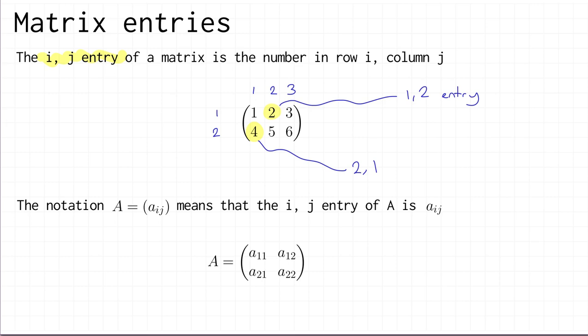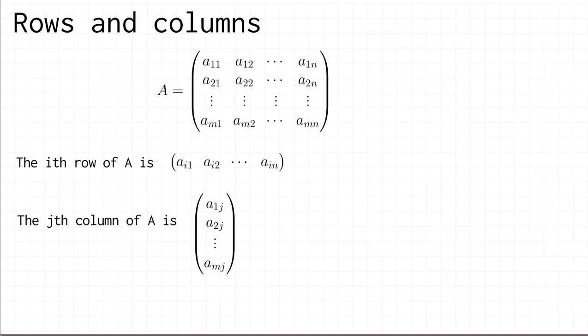We also have general notation for arbitrary matrices. When we write A = (aᵢⱼ), we mean that A is a matrix whose i,j entry is the scalar aᵢⱼ. This notation is useful when we want to talk about or prove something about all matrices of a particular size. For a two by two matrix, this looks like a matrix whose entries are a₁₁, a₁₂, a₂₁, and a₂₂.